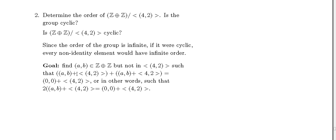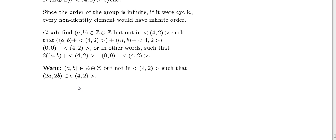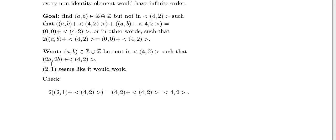If this happens, the element will have order 2. In other words, we need 2(a,b)+⟨(4,2)⟩ to equal the identity ⟨(4,2)⟩. So basically, we need (a,b) in Z⊕Z, not in ⟨(4,2)⟩, such that (2a, 2b) is in ⟨(4,2)⟩.